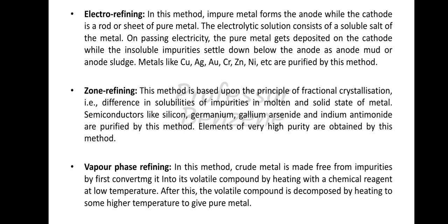The next method is electrorefining. In this method, the impure metal forms the anode, while a rod or sheet of pure metal is made the cathode. The electrolyte solution consists of a soluble salt of the metal. On passing electricity, pure metal gets deposited on the cathode, while the insoluble impurities settle below the anode as anode mud or anode sludge. Metals like copper, silver, gold, chromium, zinc, and nickel are purified by this method.